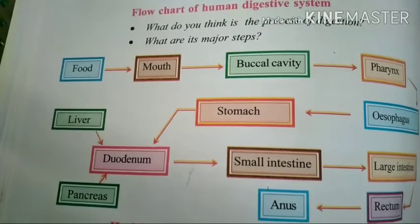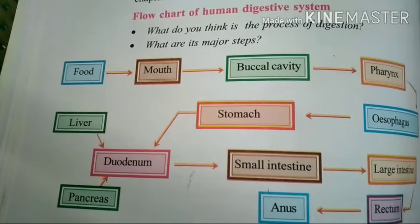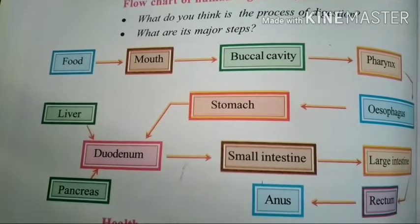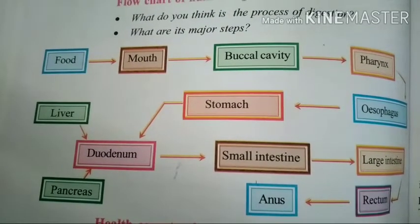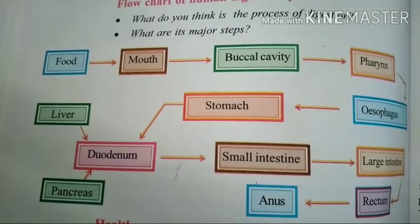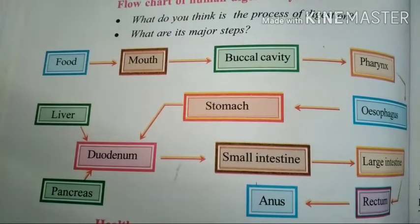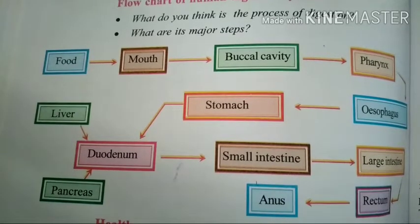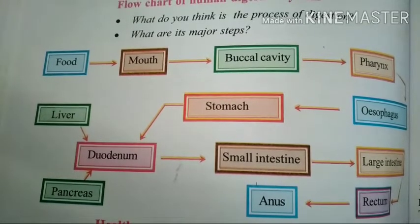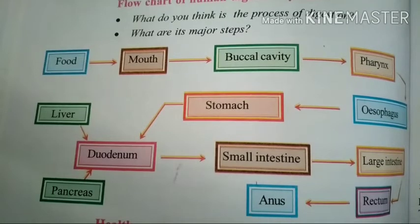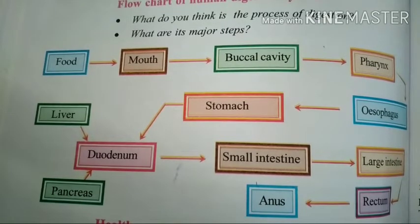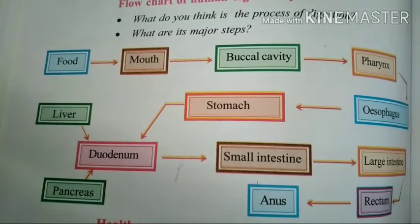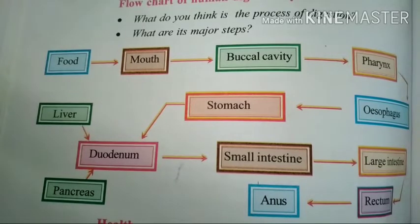Let's go to the flowchart of the human digestive system. Before that, we explained some of the digestive enzymes. Now let's see the full flowchart of the human digestive system. I completed this before — how food comes from the mouth to the anus. Here you can see the flowchart, which is also given in two-mark, one-mark, or half-mark questions. They may leave some boxes and you can complete them.